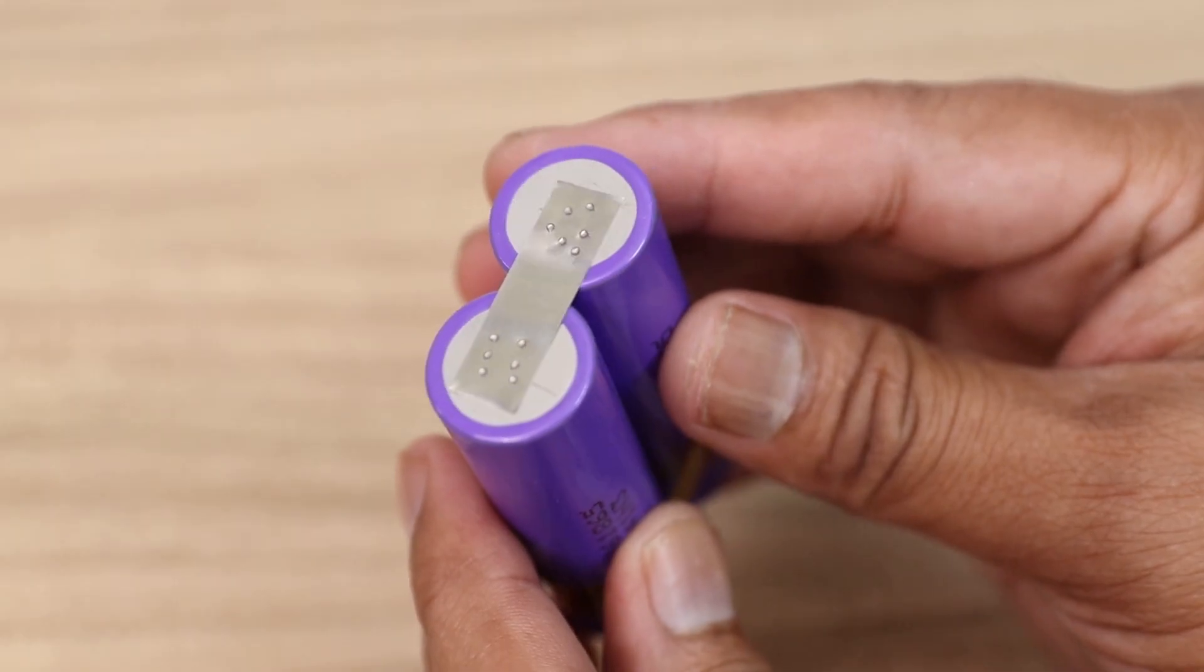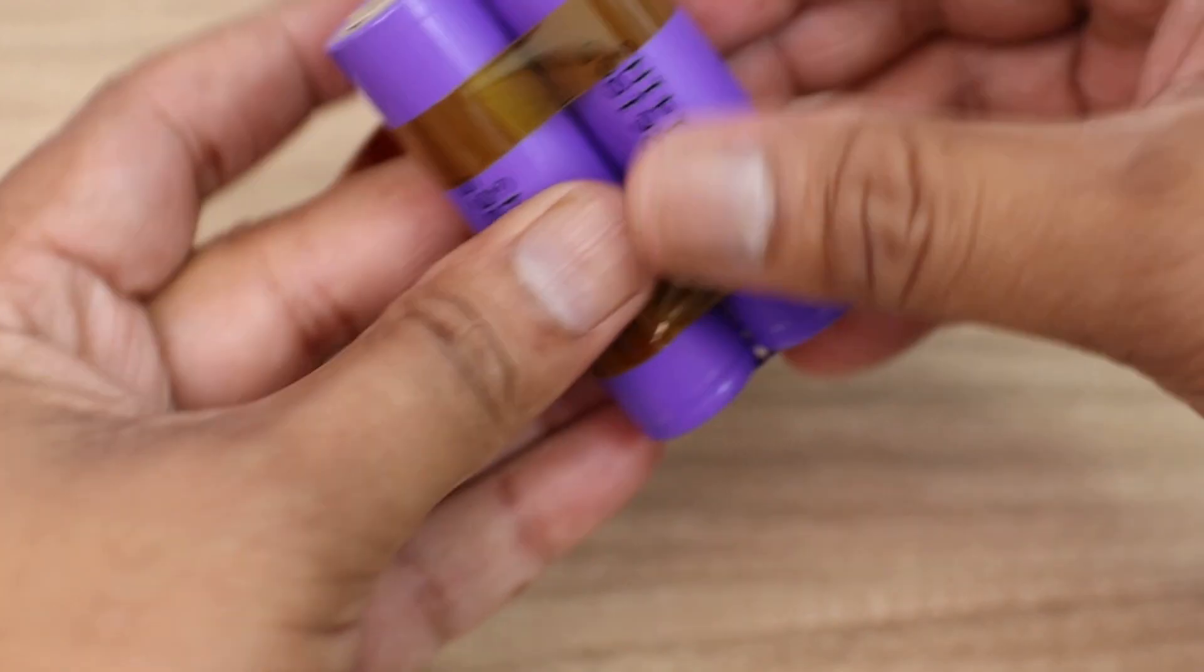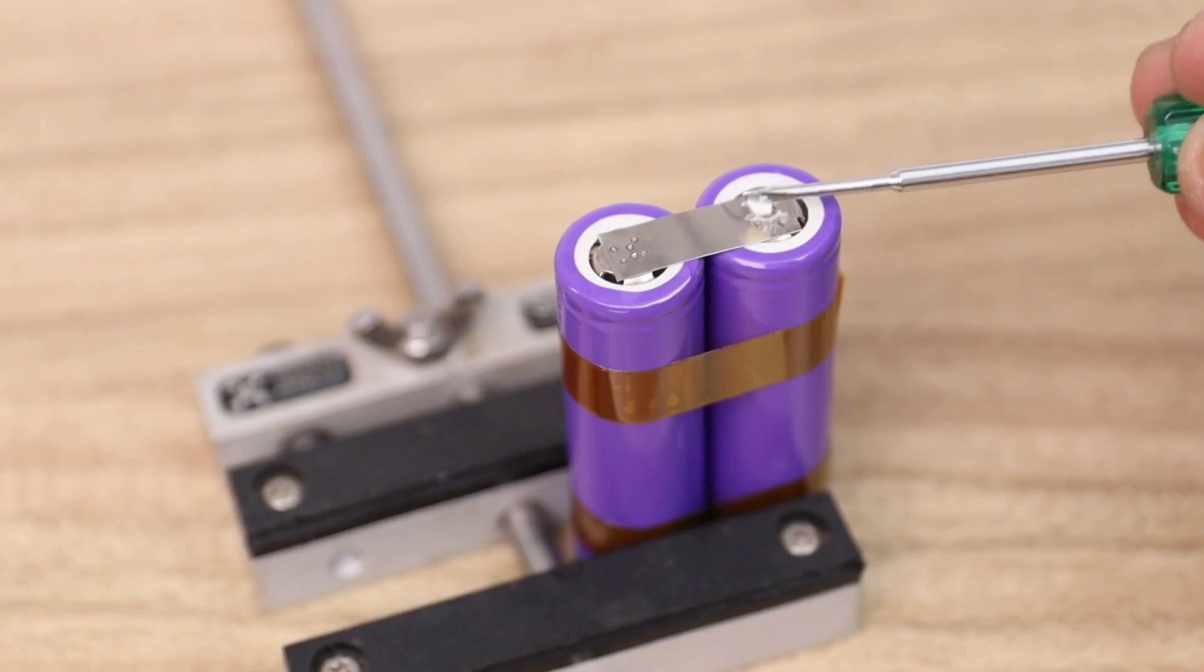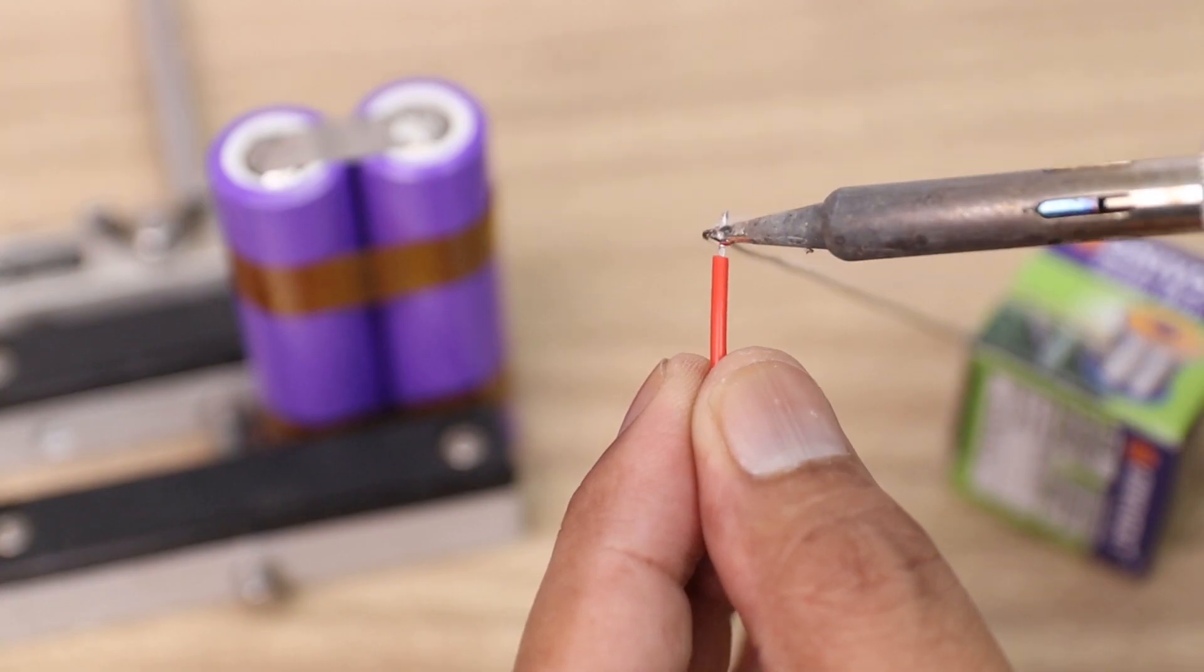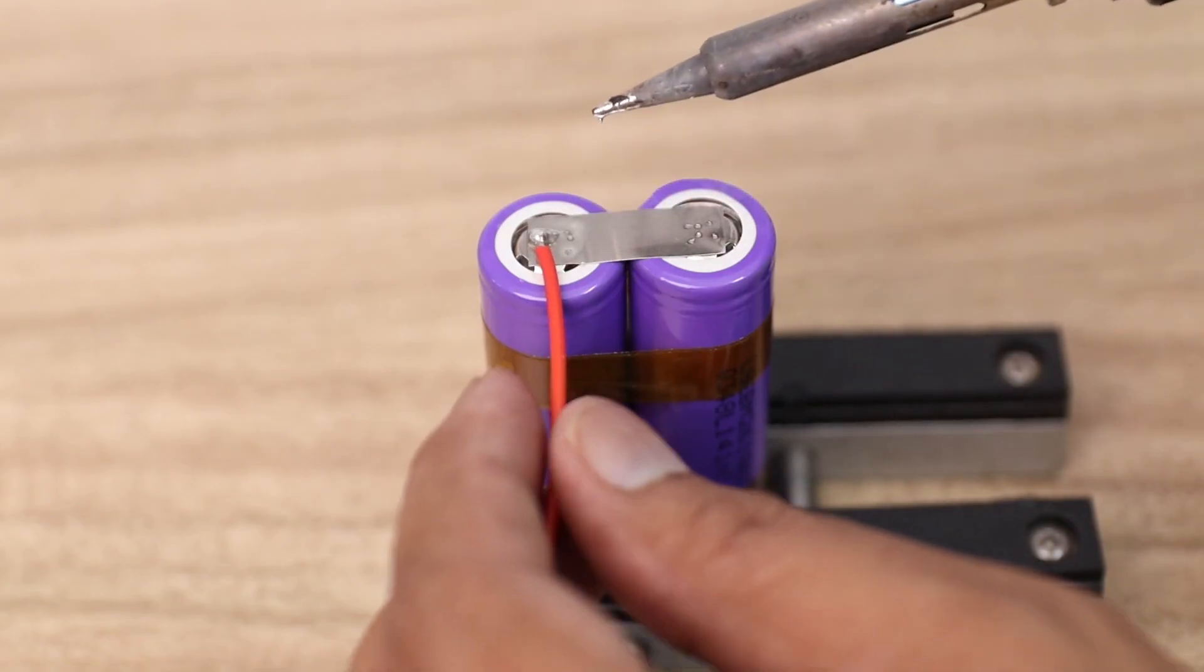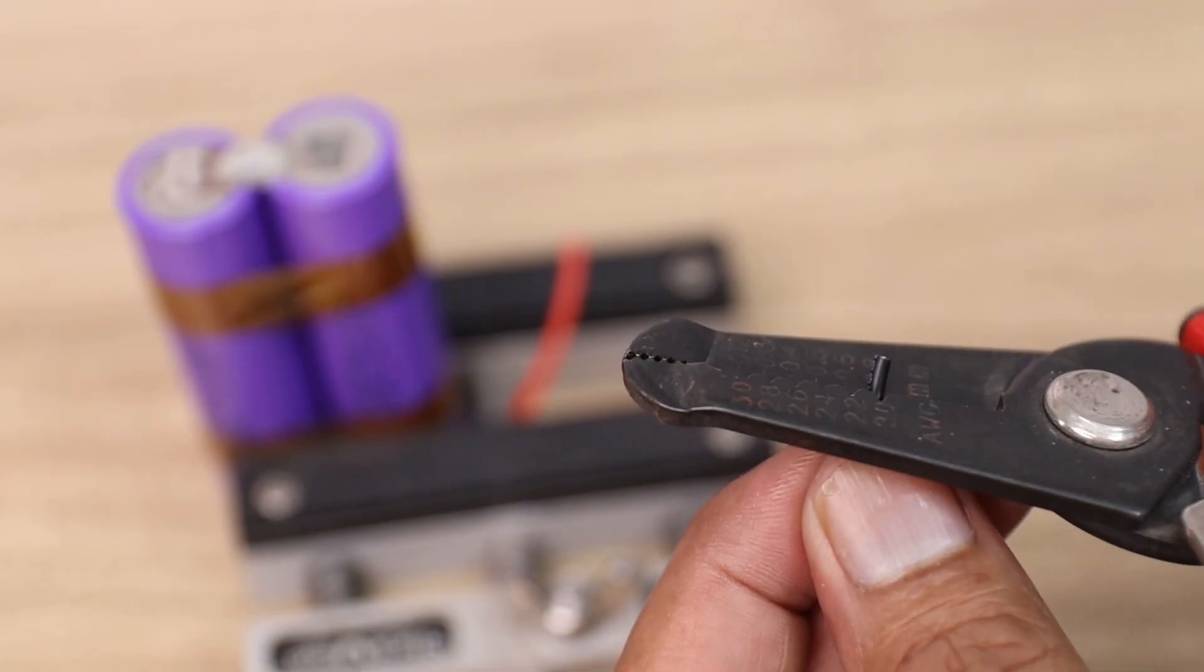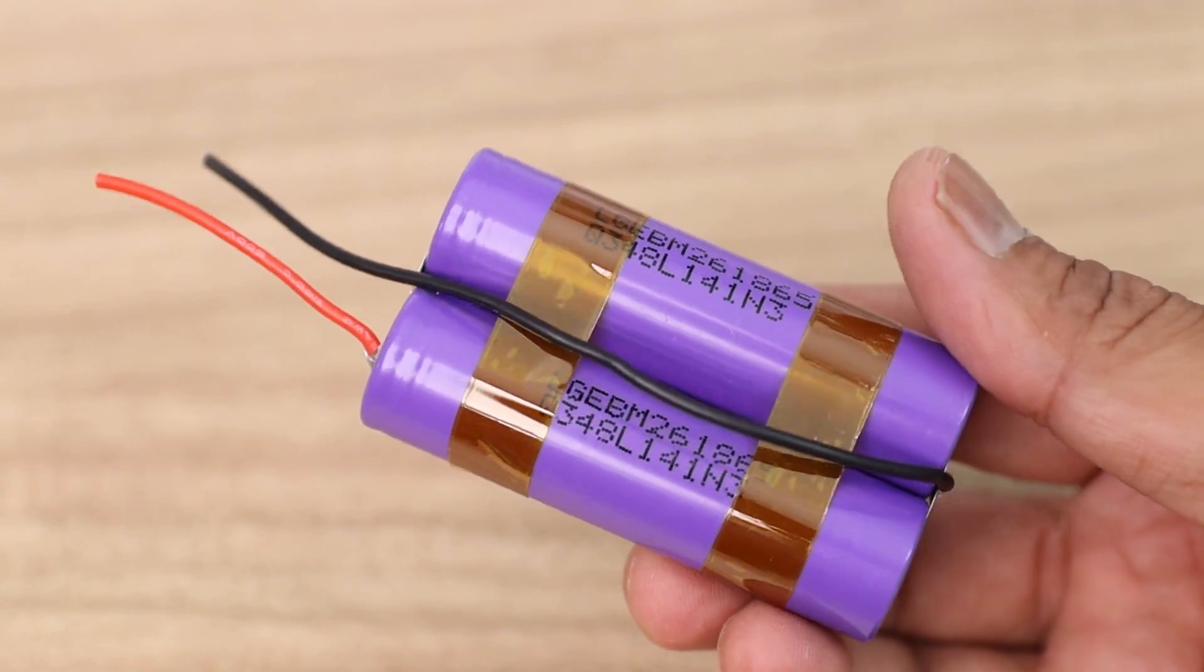After spot welding, we have to connect the terminal wires to the battery pack. But before soldering the terminal wires, apply small amount of soldering flux to the terminals. It will make the soldering process easier. Solder a red 22 AWG wires to the positive terminal and black wire to the negative terminal. Now our battery pack is ready.